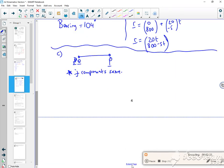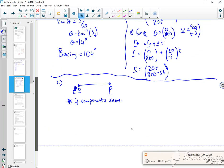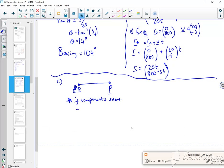The j components are the same, so we've got 20t equals 800 minus 5t, so 25t is 800, so t is 32 seconds.